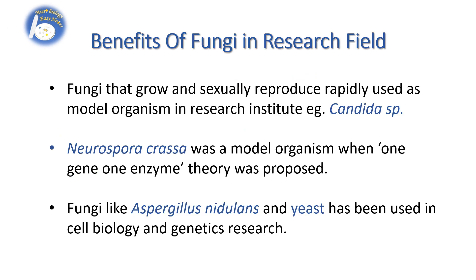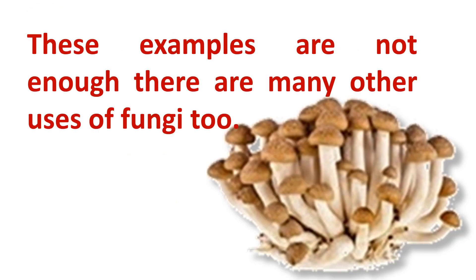Benefits of fungi in the research field: fungi that grow and sexually reproduce rapidly are used as model organisms in research institutes. For example, Candida species and Neurospora crassa was a model organism when the one-gene one-enzyme theory was proposed. Fungi like Aspergillus, Neurospora, and yeast have been used in cell biology and genetic research. These examples are not enough — there are many other uses of fungi too.